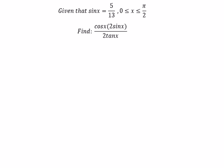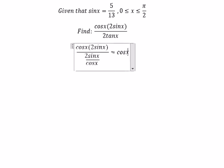For tan x, we can write it as sin x over cosine x. Next we have 2 sin x. We cancel the 2 sin x here, so we get cosine x over 1 over cosine x.